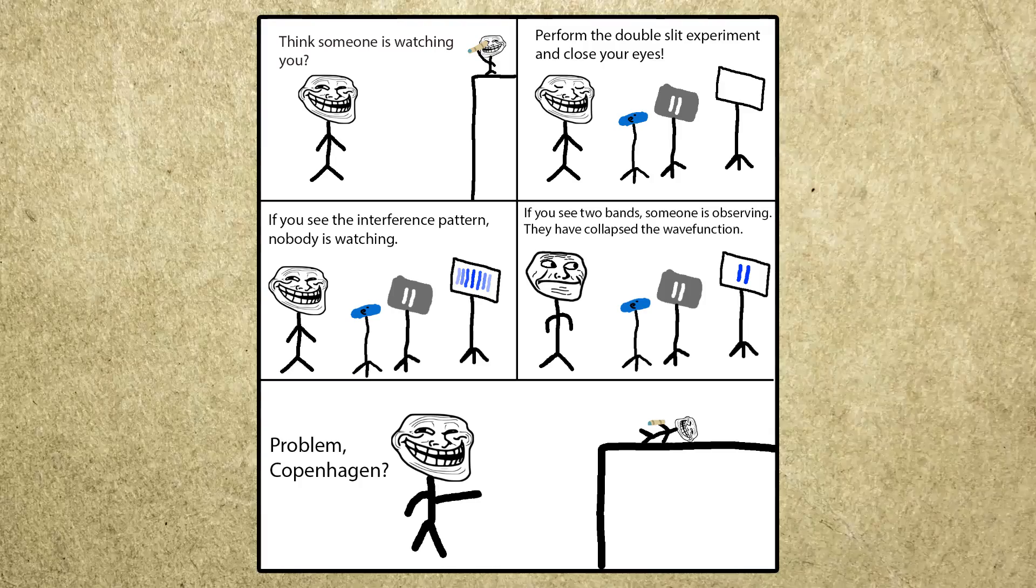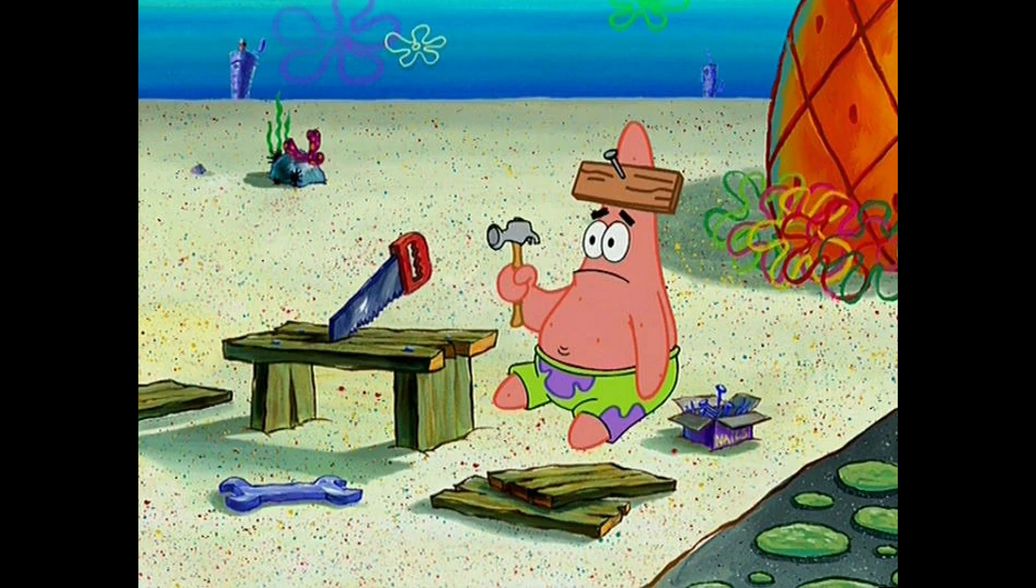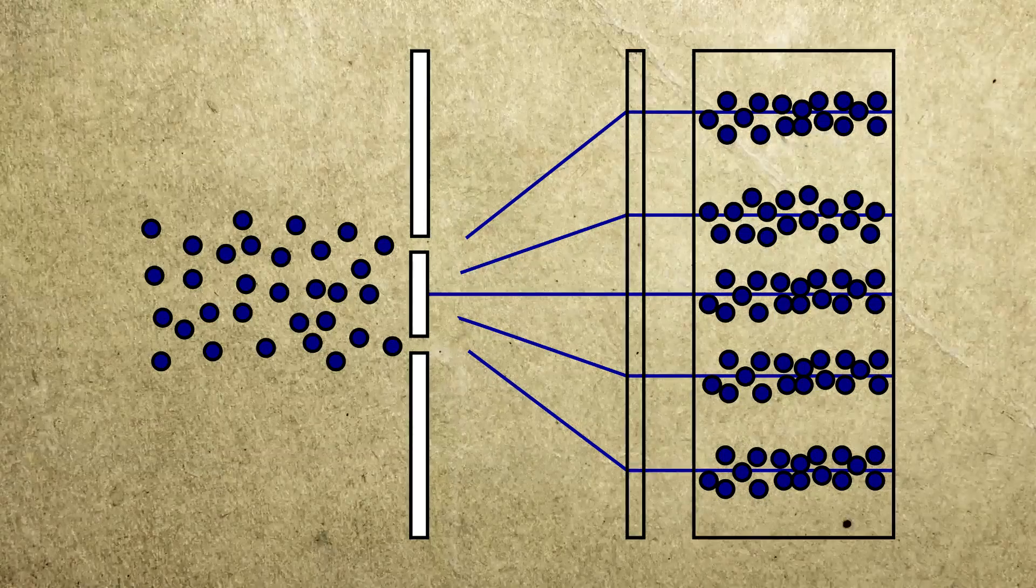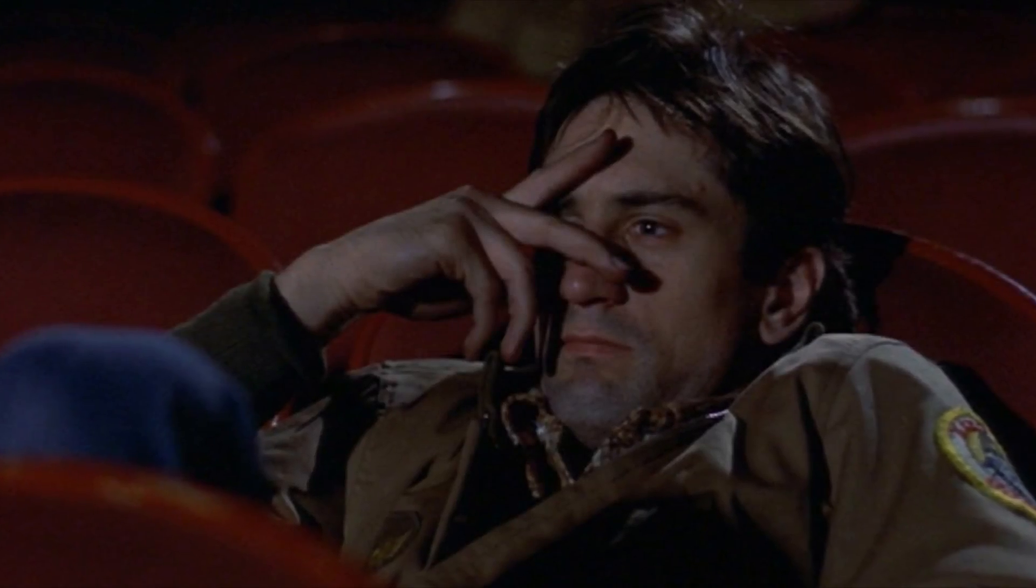This panel suggests using the double slit experiment to detect intruders and it doesn't work because this experiment is often badly explained.